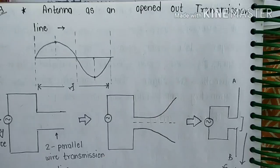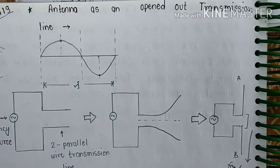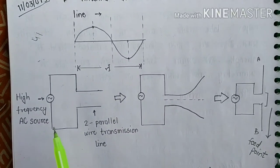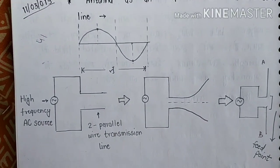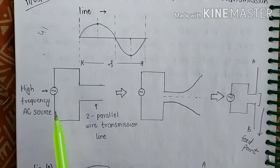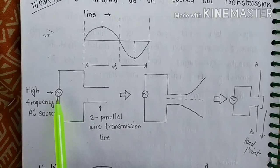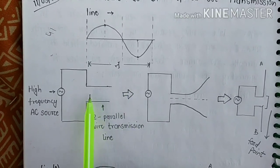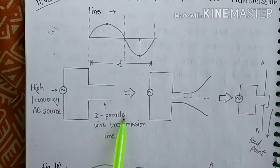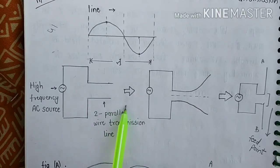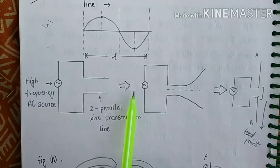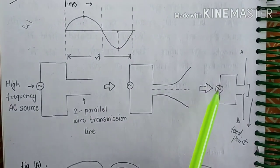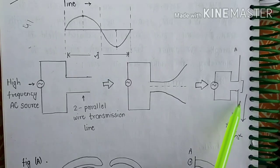The last point is the antenna as an open-out transmission line. In the figure, we see a two-wire parallel wire transmission line that is open-circuited. We can see that from the open end, the parallel wire transmission line is open.